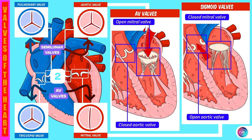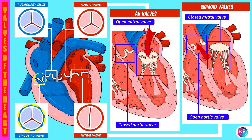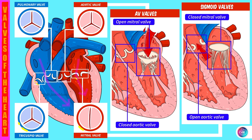Here is a breakdown of the AV valves. First, the tricuspid valve, which regulates the flow between the atrium and the right ventricle. Then we have the mitral valve, which regulates the flow between the atrium and the left ventricle. In contrast, the sigmoid valves, or semilunar valves, are described as follows: the pulmonary valve, which regulates the flow between the right ventricle and the pulmonary trunk, and the aortic valve, which regulates the flow between the left ventricle and the aorta.